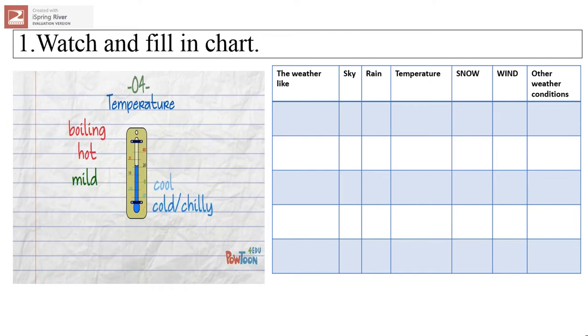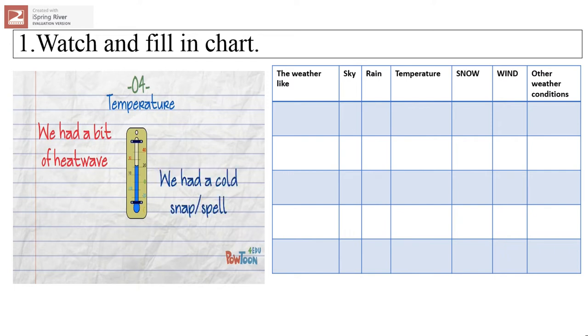It can be cool, cold or chilly, and when it's really cold, it's freezing. And this type of condition is called frost. We usually have it in winter. To describe a period of hot weather, we say we had a bit of heat wave. And if it was cold for some time, we say we had a cold snap or a cold spell.